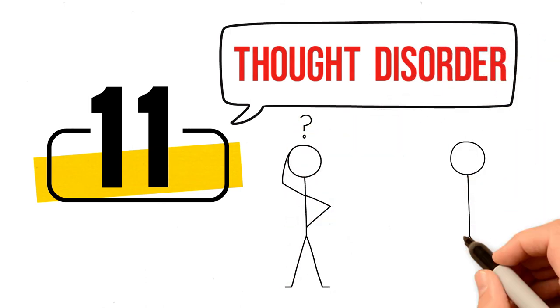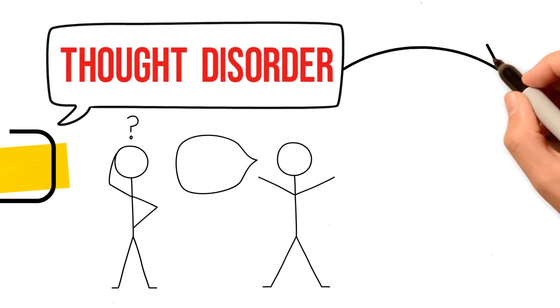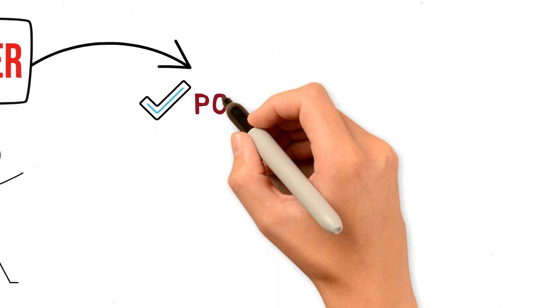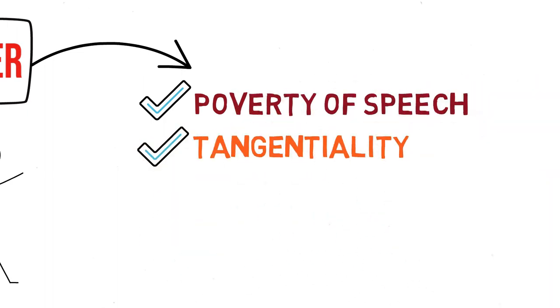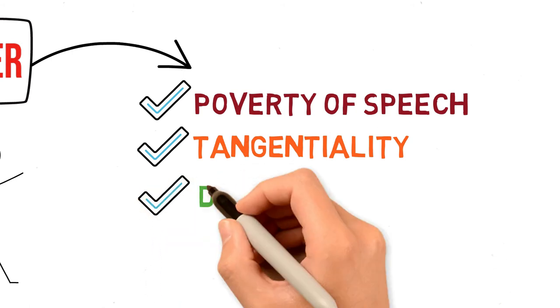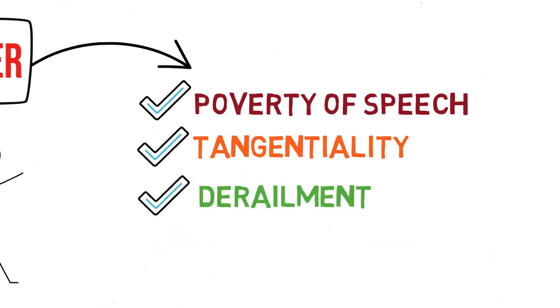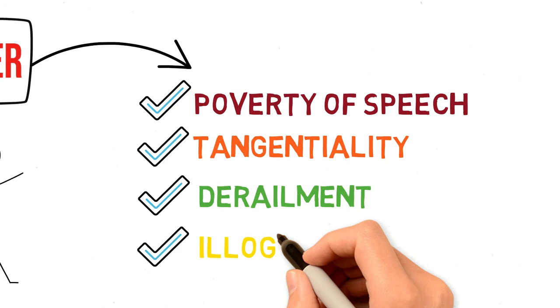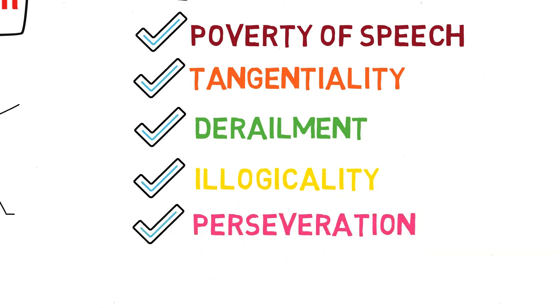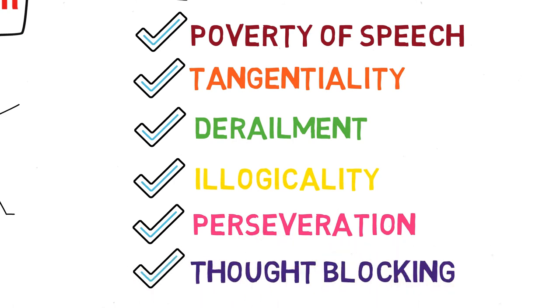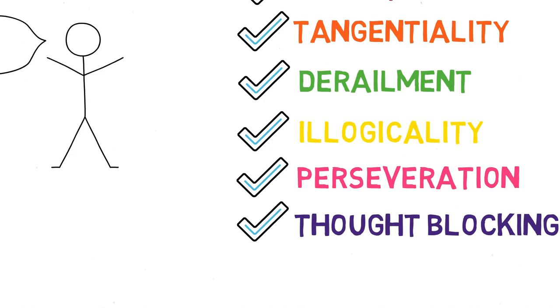Thought distortion includes such issues as poverty of speech, tangentiality (which is the tendency to speak about topics unrelated to the main topic of discussion), derailment (that is, conversational narrative consisting of a sequence of unrelated or only remotely related ideas), illogicality (that is, drawing conclusions that do not follow from the premises), perseveration (which is the repetition of a particular response such as a word, phrase, or gesture), and thought blocking (that is, ceasing to speak suddenly and without explanation mid-sentence).